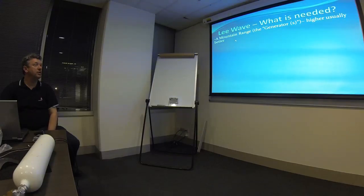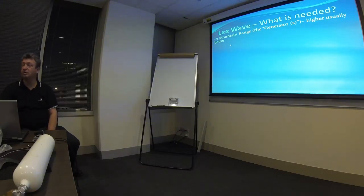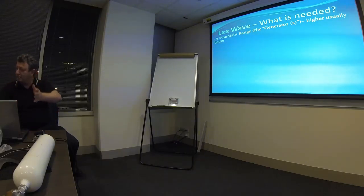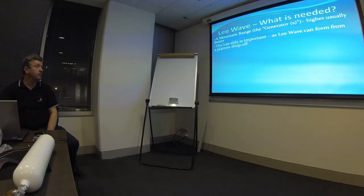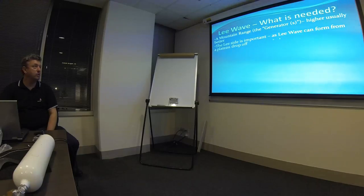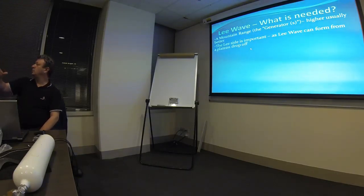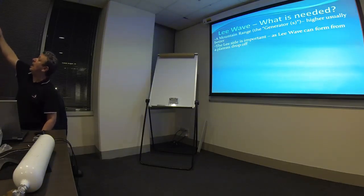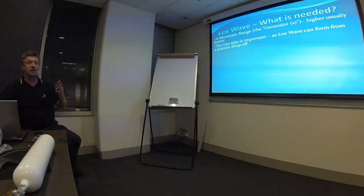Things that are needed: obviously the mountain range — the generator. The higher, usually the better. You only need something a few hundred feet high to actually generate wave, but it's less likely than something tens of thousands of feet high which has a better chance of setting a wave up, because it's going through greater layers of the atmosphere. The lee side is the important bit — you can even get lee-wave from a plateau drop-off. It's not the upwind side doing it; it's the downwind bit where it drops off and the air descends, and because of the stability of the air it wants to go back where it came from, but due to inertia it overshoots — and that's the basics of how a wave is set.